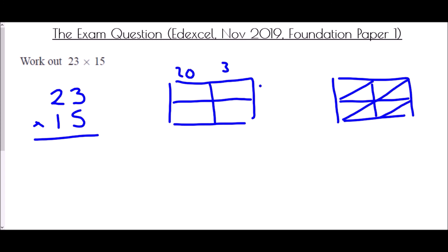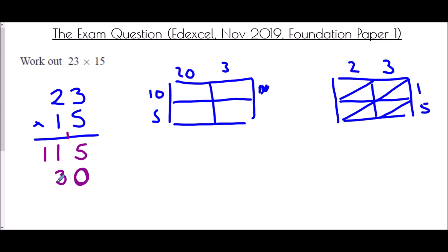Working through the column method for 23 times 15: 5 times 3 is 15, write 5, carry 1. 5 times 2 is 10, plus 1 is 11. Then for 10 times 23, write a 0 first, then 1 times 3 is 3, and 1 times 2 is 2. Adding the two rows together: 5, 4, 3. So the column method gives 345.